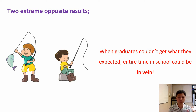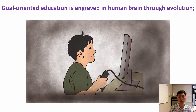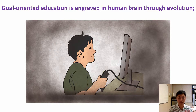In reality, only a few university students actually get the job they wanted — many fall somewhere in between. This is our reality. Goal-oriented education is so deeply engraved in the human brain through evolution. What makes humans human is the brain difference from monkeys — memory capacity is much greater, and because of that, this goal-oriented learning method is engraved inside the human brain.